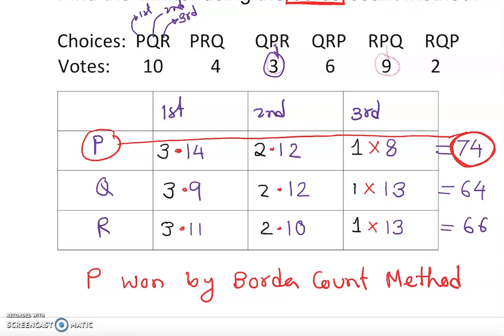Borda Count involves calculation, as you can see — there is a lot of computation going on. Is it possible to have a tie? Yes — if Robert also had 74, we would have a tie and no winner. So reviewing: plurality may not have a winner, majority may not have a winner, Borda Count may not have a winner — but the elimination method must have a winner. That is all about Borda Count. Thank you.